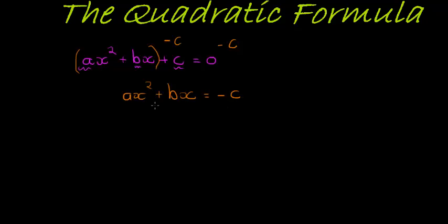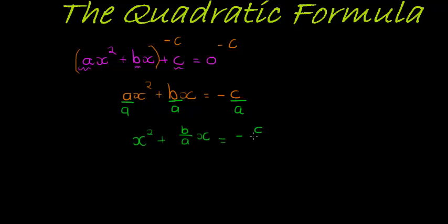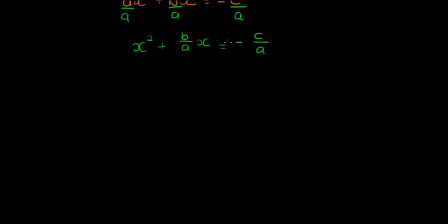In the next step, you'll recall that we don't want any coefficient for x other than 1. So I have to divide by a — but when I divide by a, I must divide everything by a. So now I'm left with x squared plus b over a times x is equal to negative c over a.